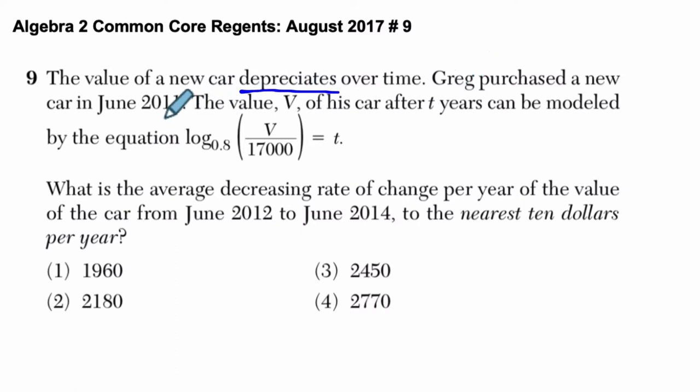So Greg purchased a new car in June 2011. This is where time is zero. He buys a new car on that date. The value V of his car for T years can be modeled by this equation. Here's the equation: log base 0.8 of V over 17,000 equals T.